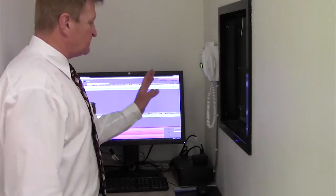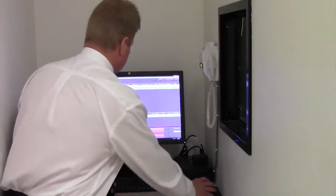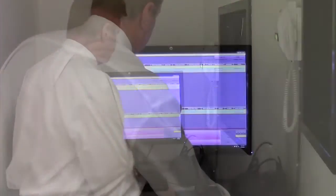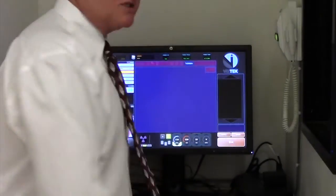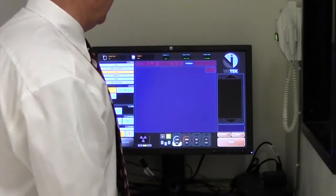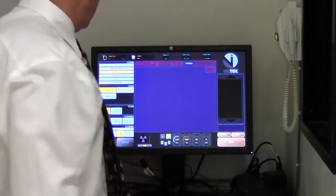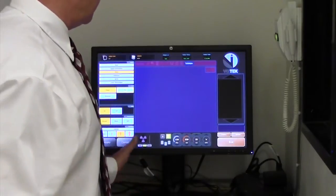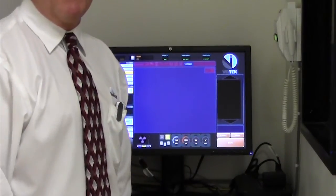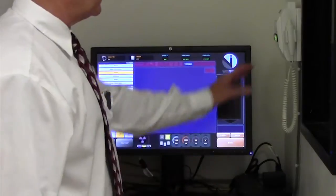The software drives and controls the operator's console. To acquire an image, you basically input the patient's ID number, name, date of birth, select the procedure, and the acquisition screen appears. Once you pick the procedure, the patient size, the anatomical program controls the exposure factors.